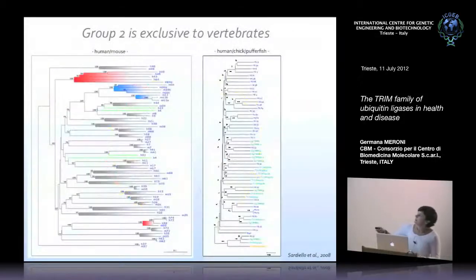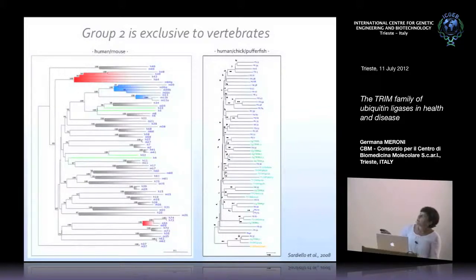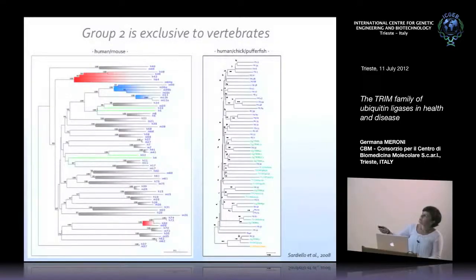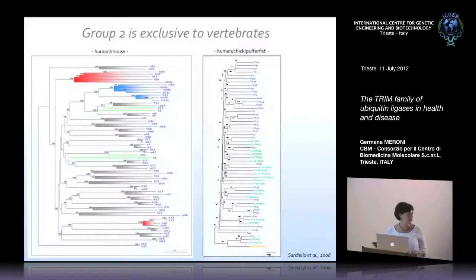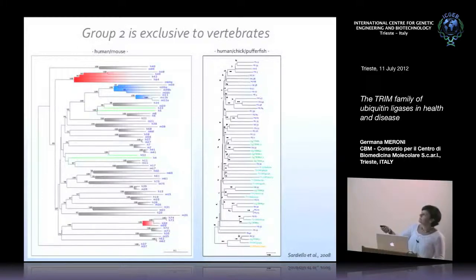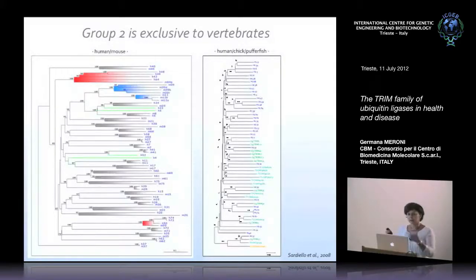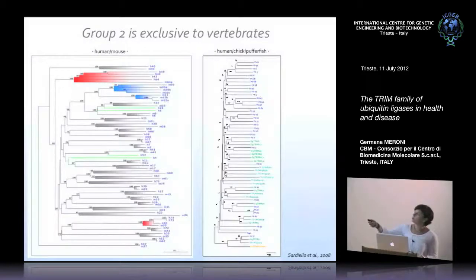This strict orthology is not true for group 2. In a phylogenetic tree aligning human and mouse group 2 genes, some branches are completely human-specific with no counterparts in mouse, which is quite unusual when comparing mouse and human genomes. The reciprocal is also true — the mouse possesses some private group 2 genes. In non-mammalian vertebrates like puffer fish and chicken, group 2 genes are completely diverged and unrelated to the human counterpart.